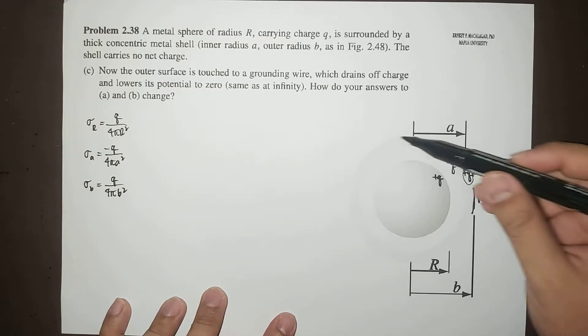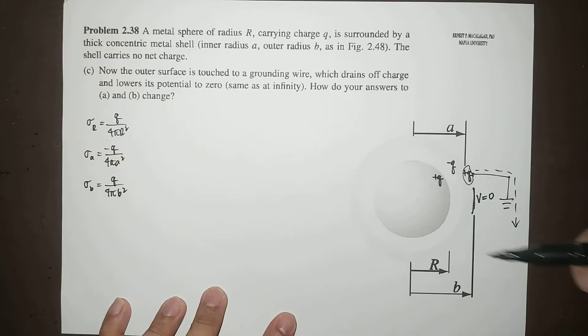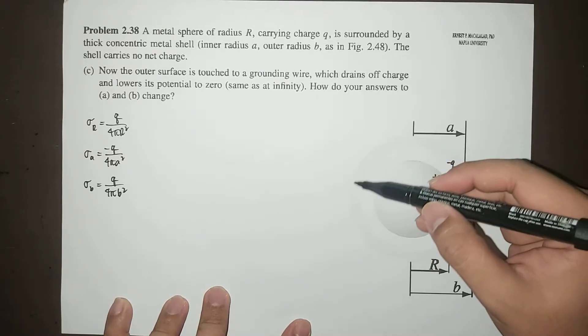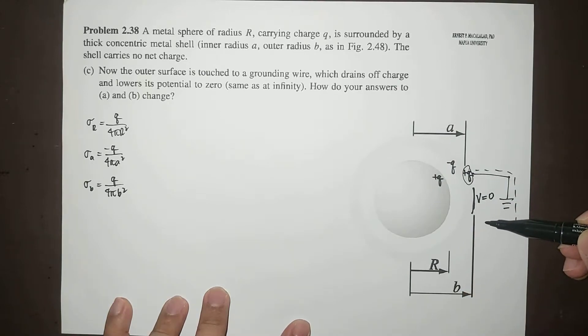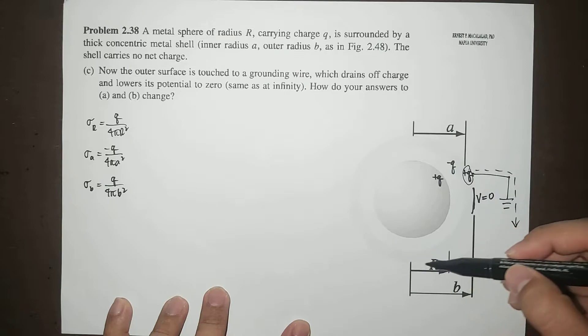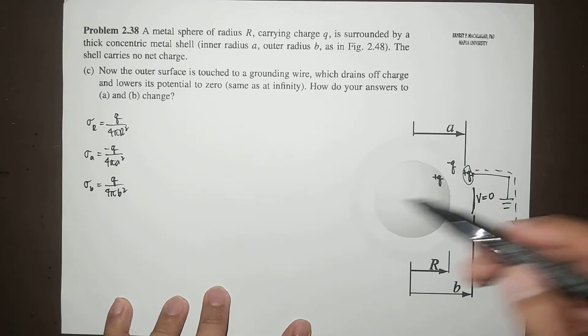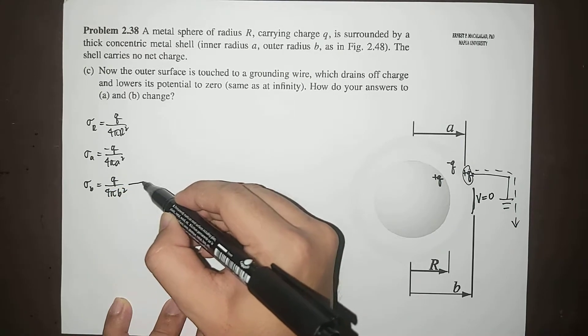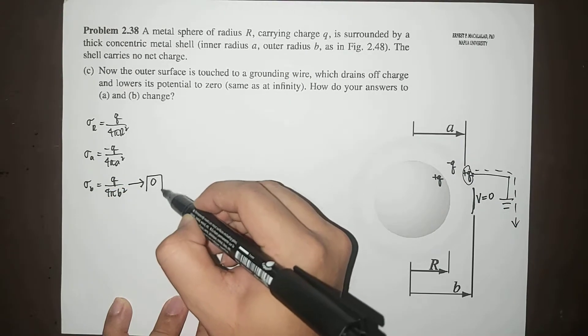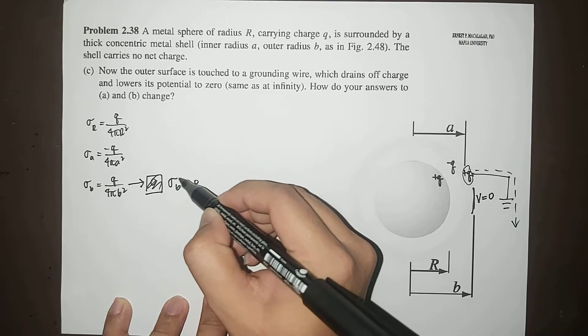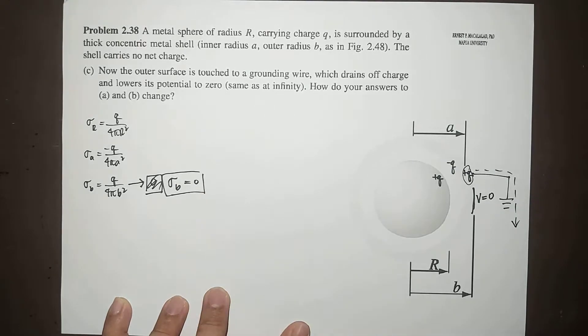And the surface charge at B would be Q over 4πB squared. Now because of the grounding of the outer surface of the shell, the shell at the outer surface will now have zero potential, therefore there will be zero